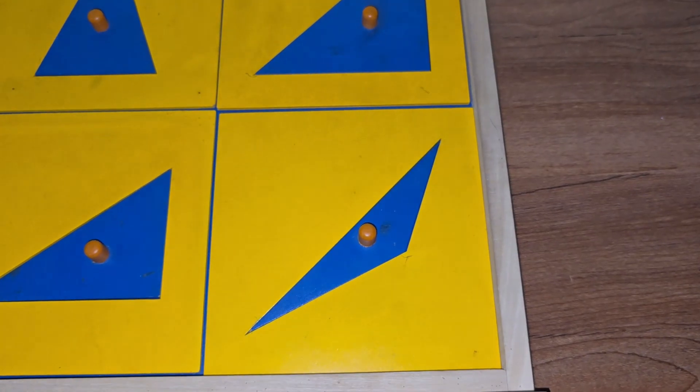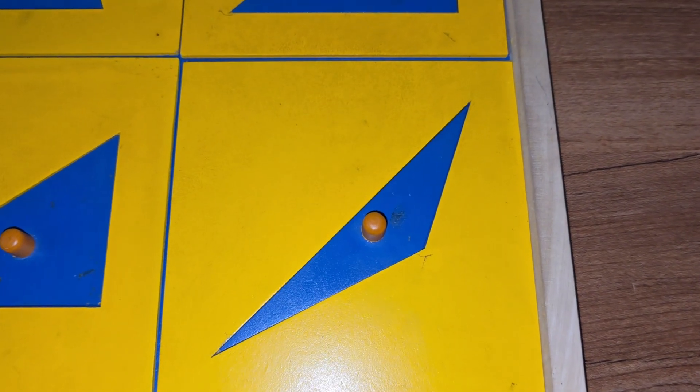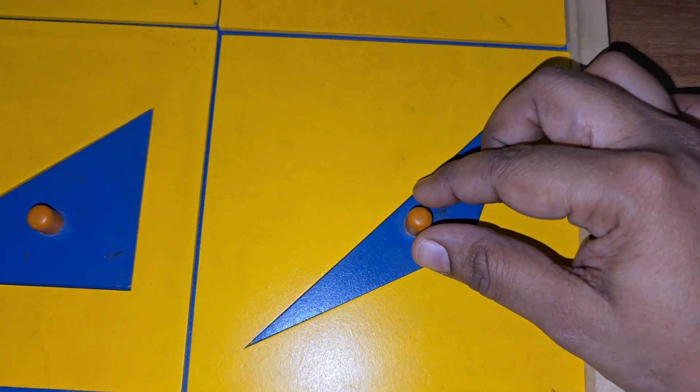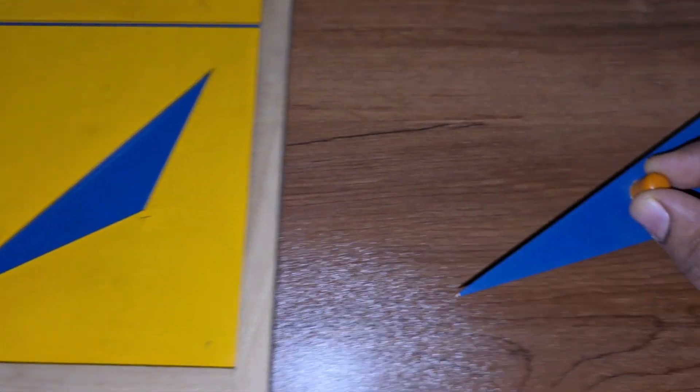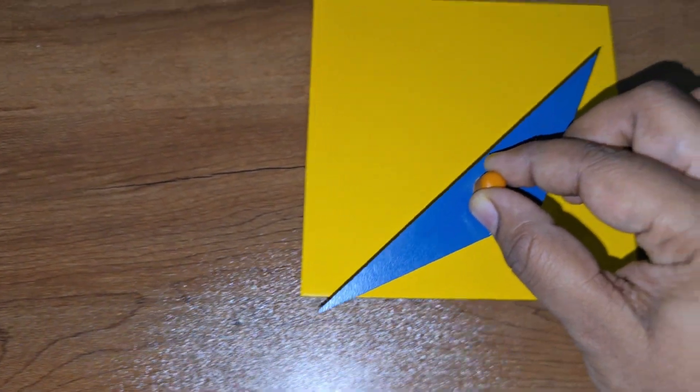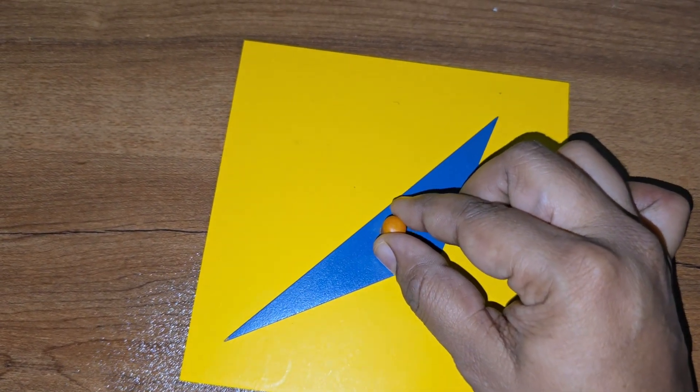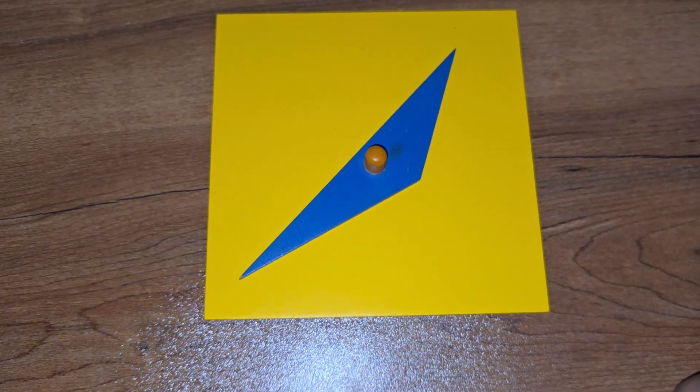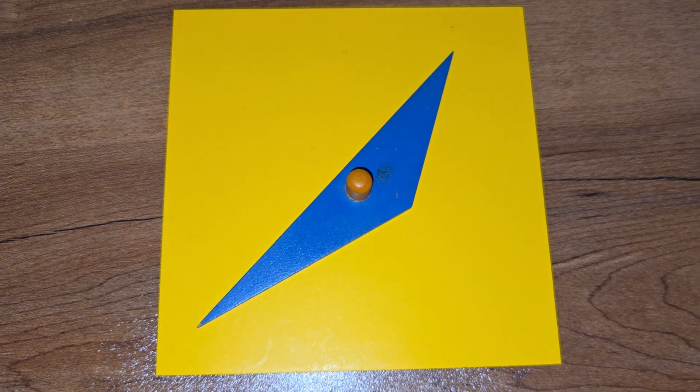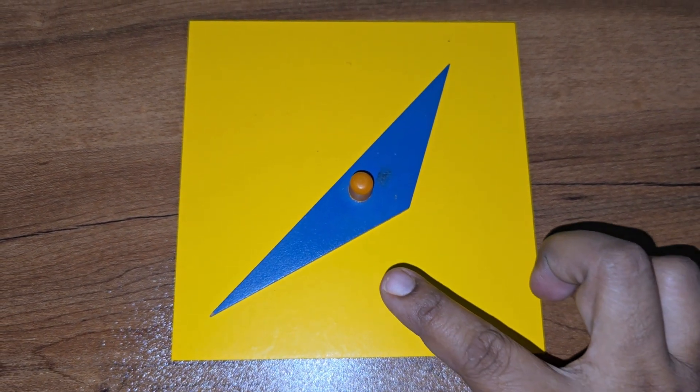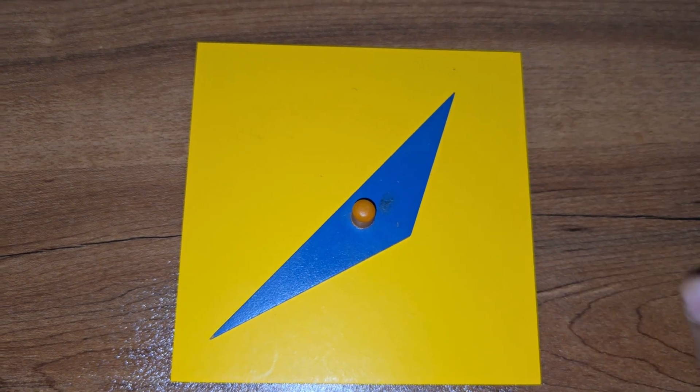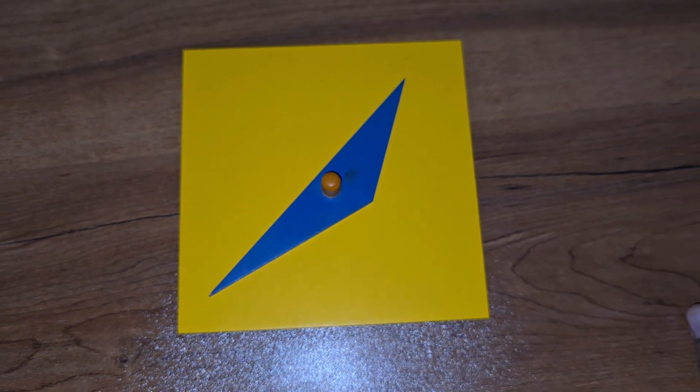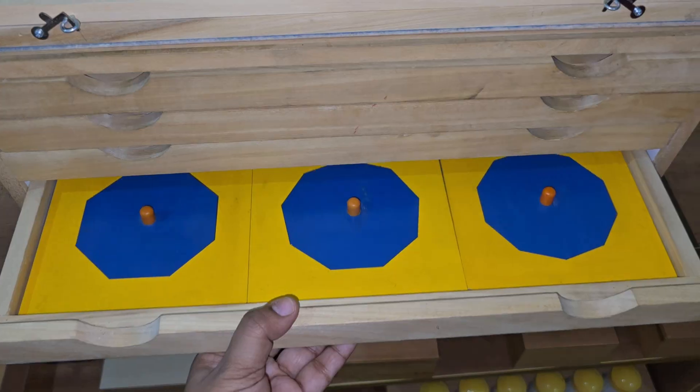Our last triangle: obtuse angle scalene. Here, all three sides are different and also three angles are different. Three sides and three angles are different in measurement. One angle will be greater than 90 degrees and the other two angles are less than 90 degrees. Now we are going to the next drawer, the fourth one.